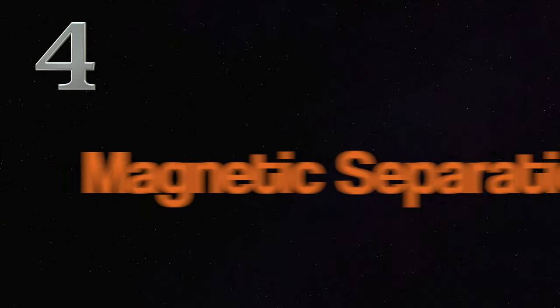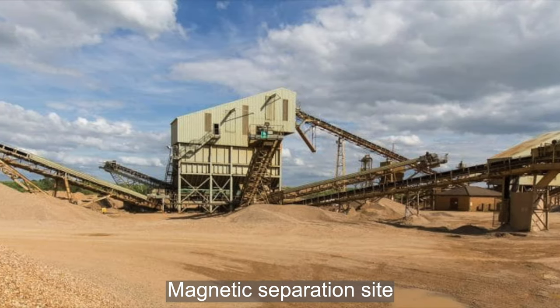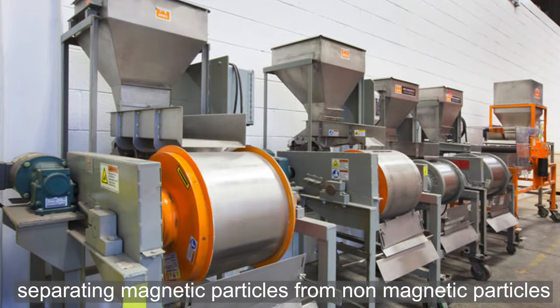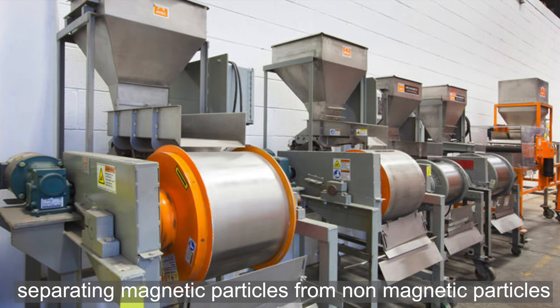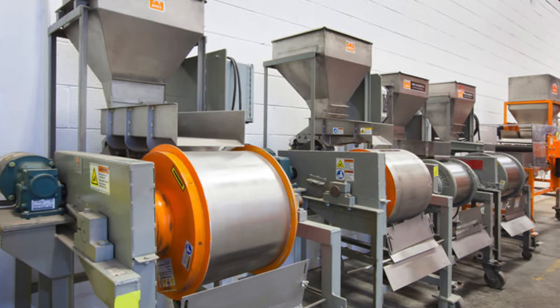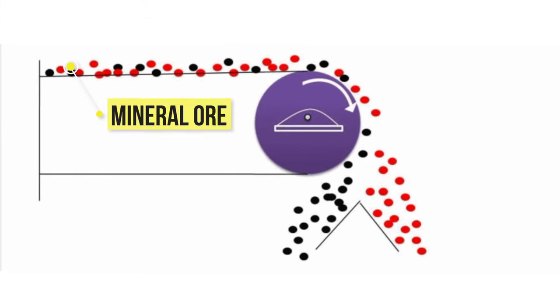Number 4. Magnetic separation. When one substance in the mixture has some magnetic properties, then this method can be quite useful. Strong magnets are commonly used to separate magnetic elements. How does magnetic separation work? For example, mineral ore that contains two compounds, one magnetic and the other non-magnetic, can be separated using this method.